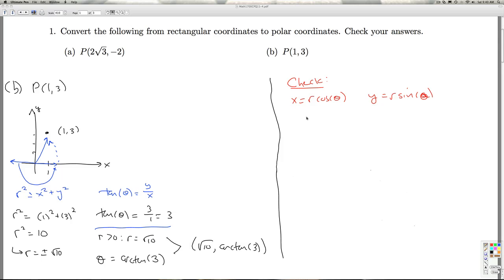So let's check the radical 10, arc tangent 3. x is radical 10 cosine arc tangent 3, and y is radical 10 sine arc tangent 3.